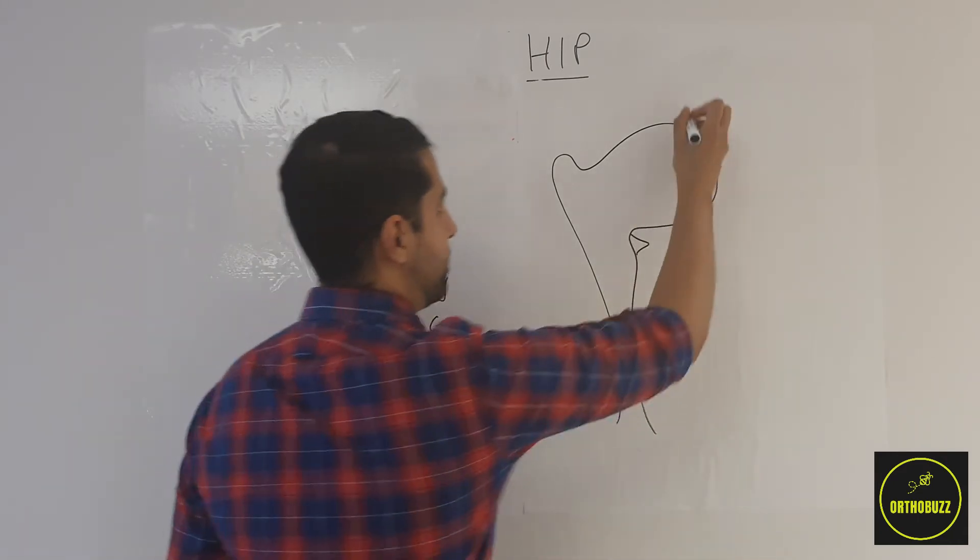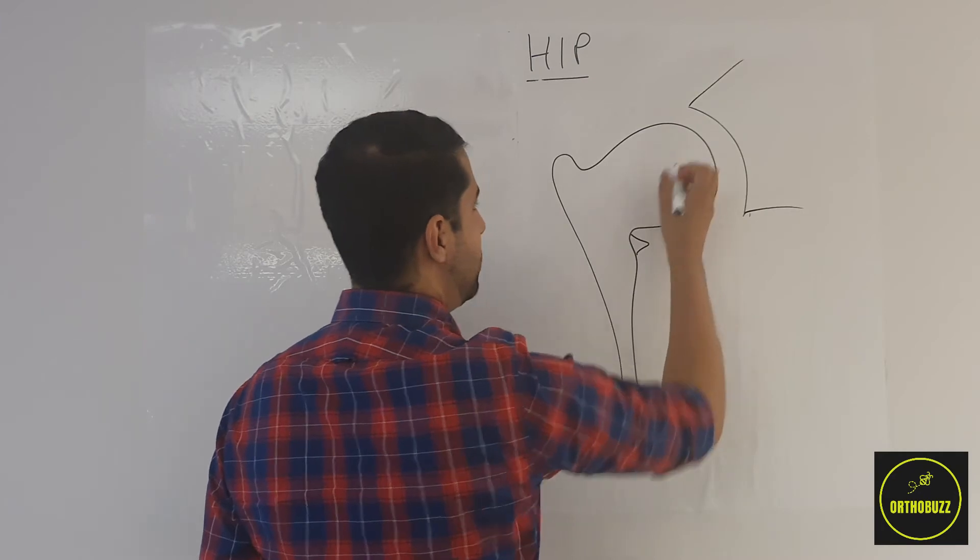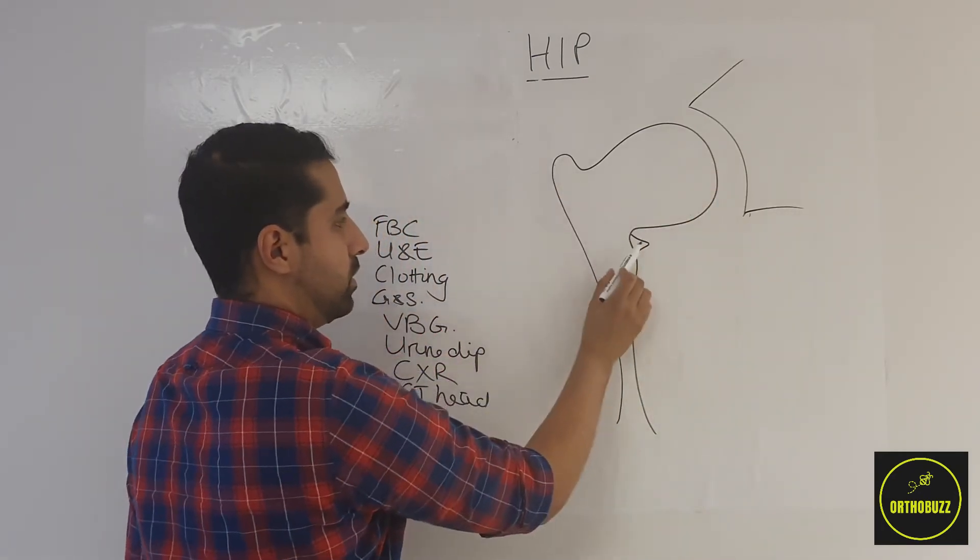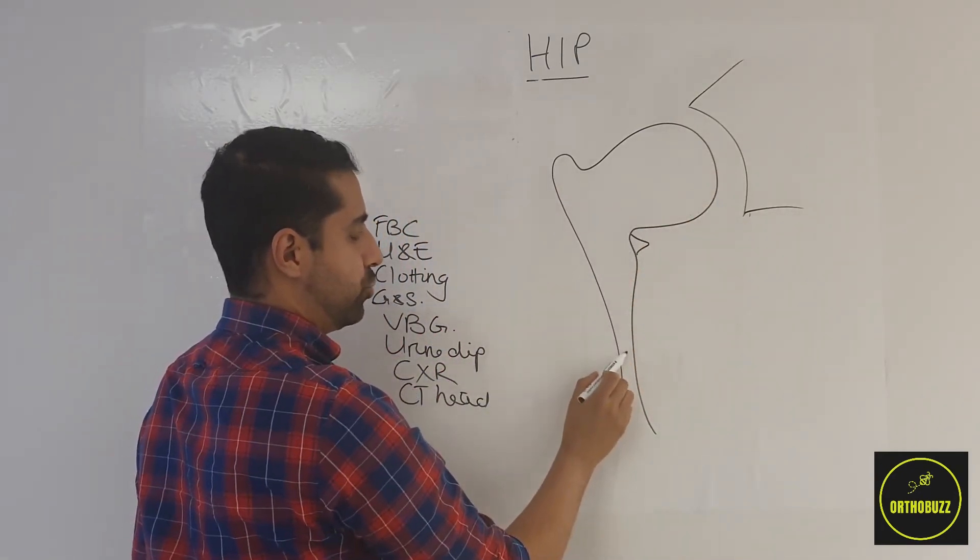Here's a picture of the femur. We have the head of the femur, the greater trochanter, lesser trochanter, and the shaft or diaphysis.